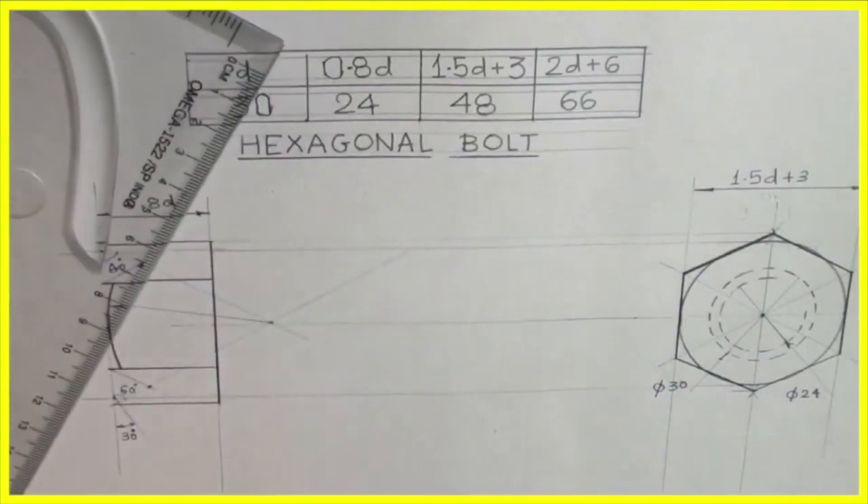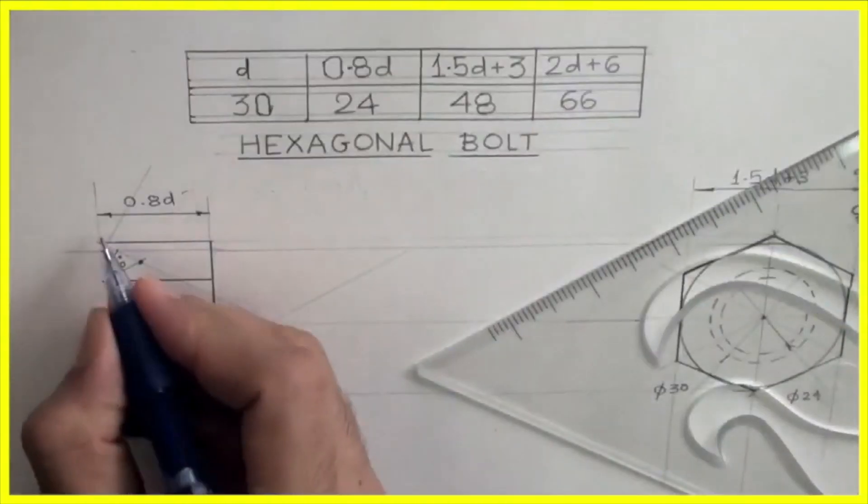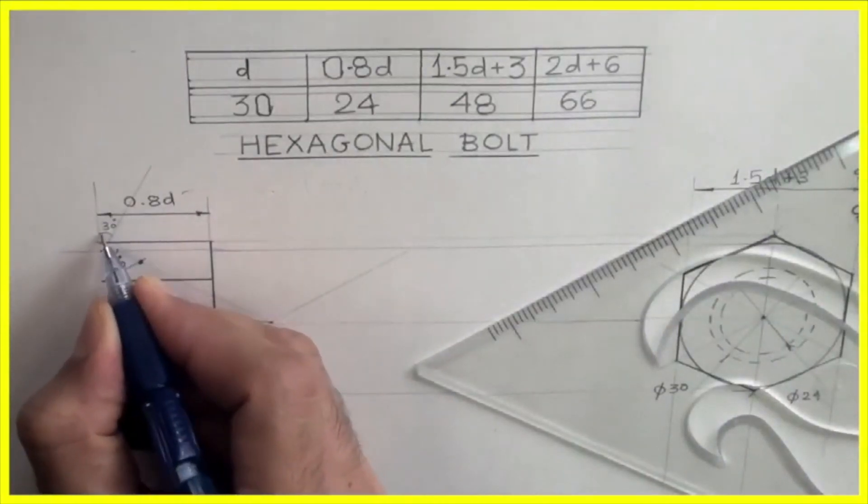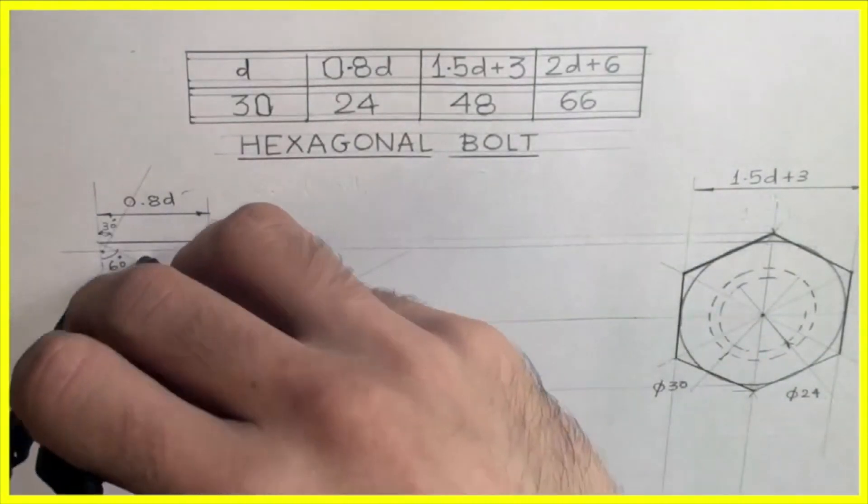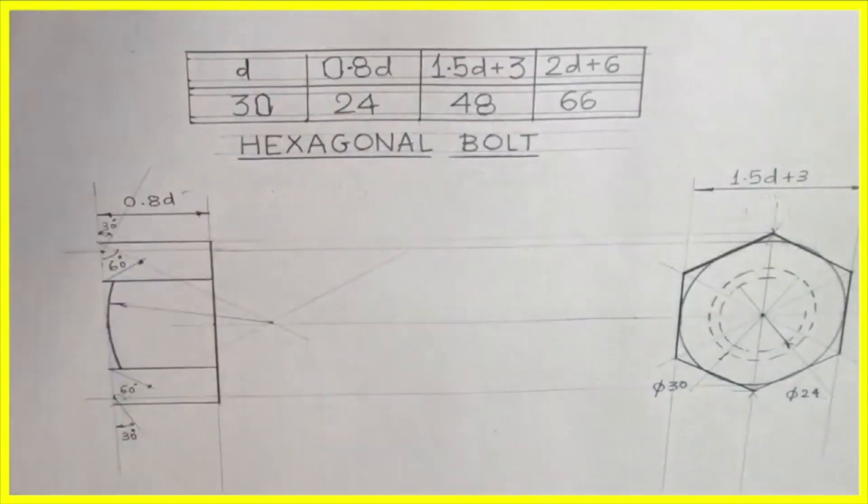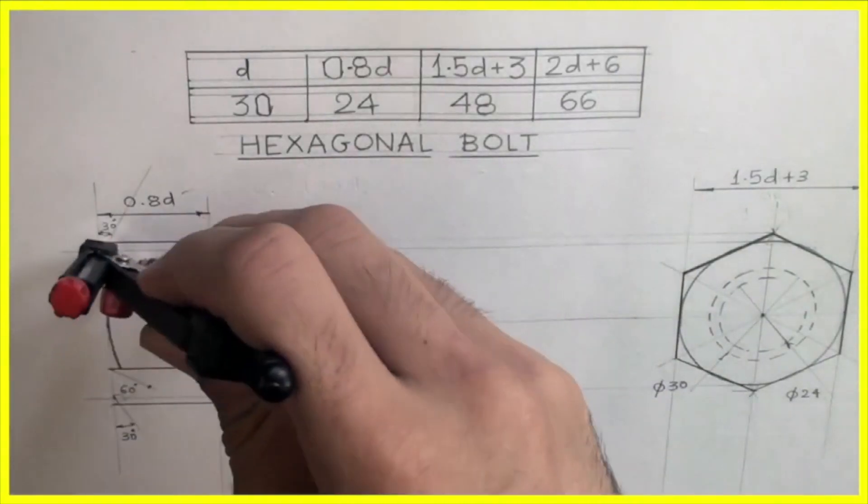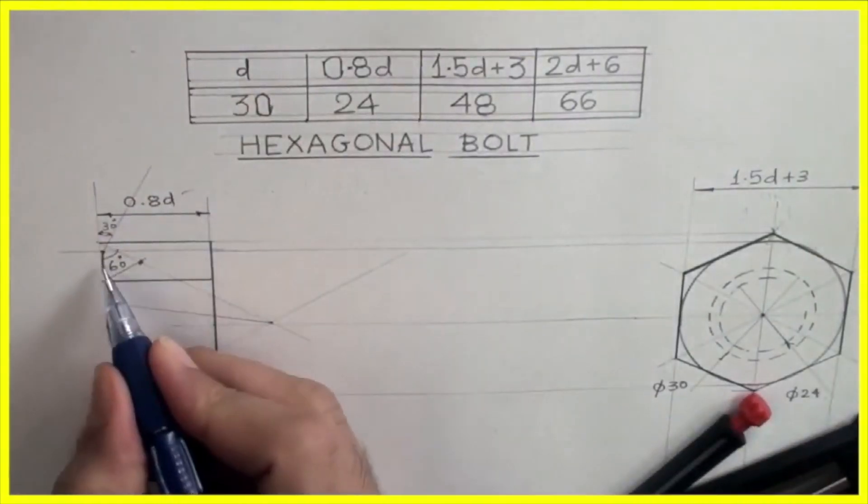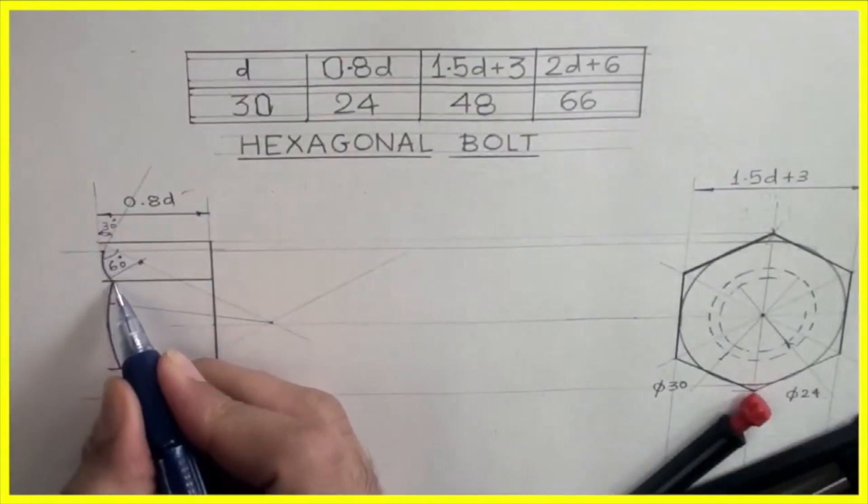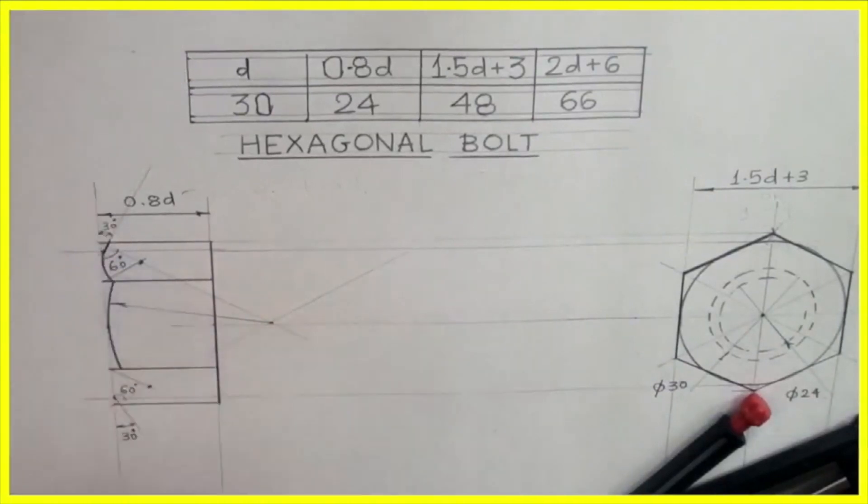From here, extend and draw 30 degree with vertical. After that from this point, take this radius and draw an arc. From here you will draw arc and make sure it is touching that 30 degree line. This curve we need to draw till here, and from here we need to draw that 30 degree line. This is important.